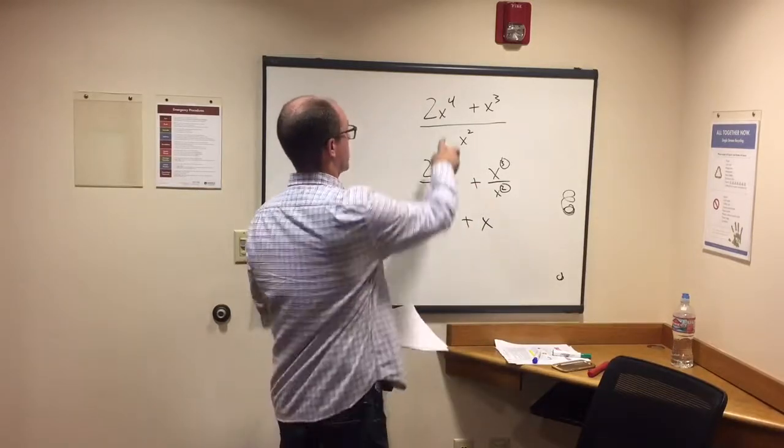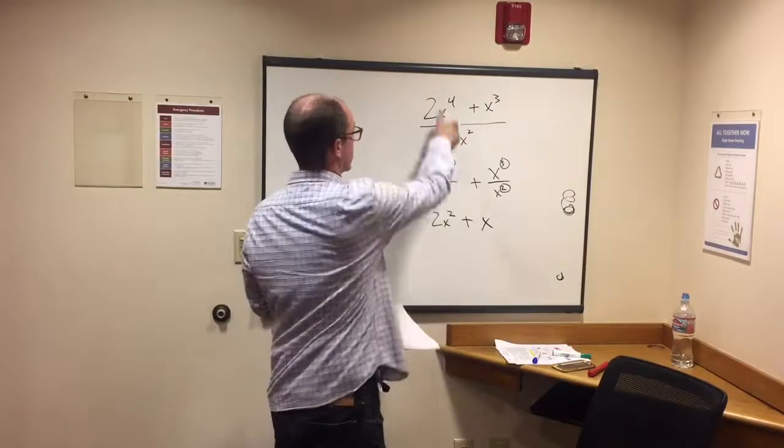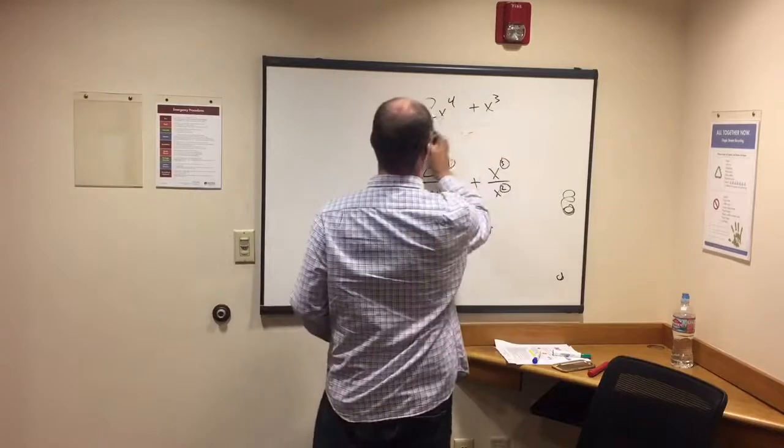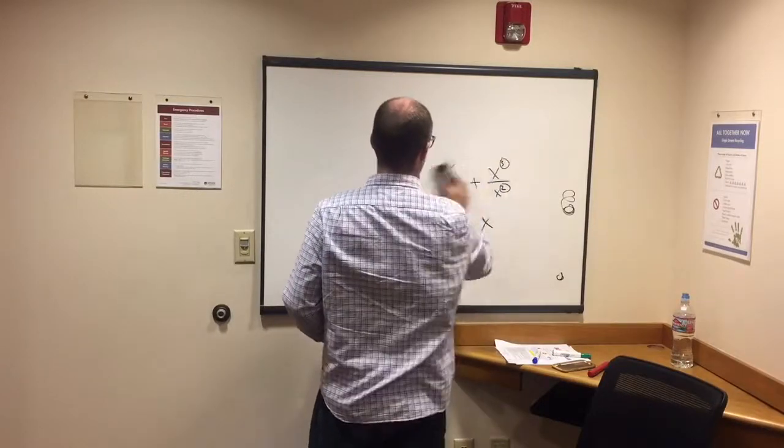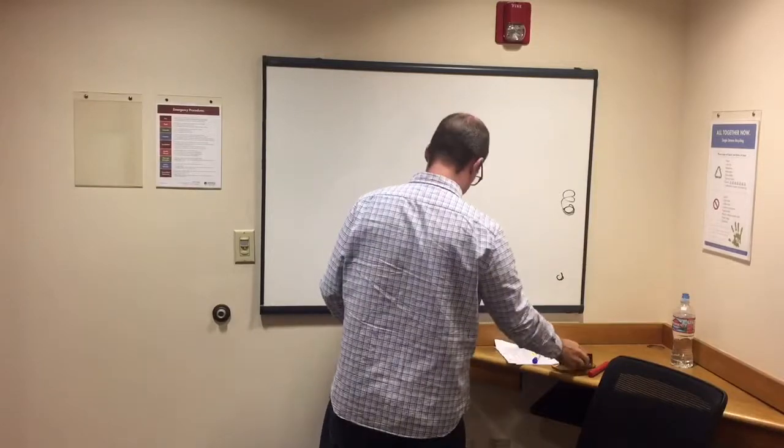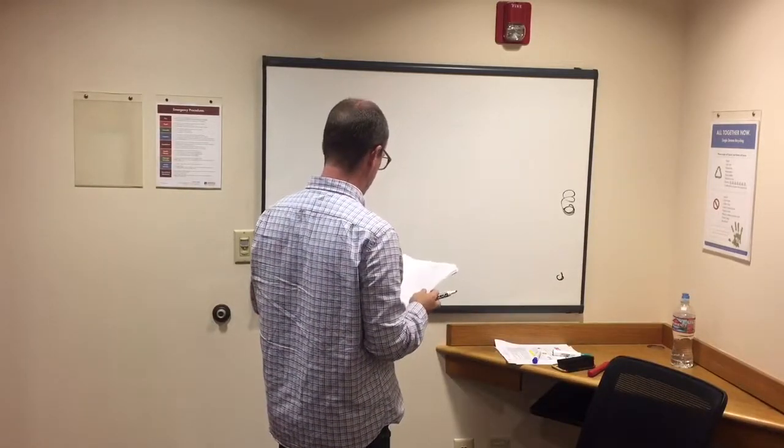We need to remember that we divide both the numbers on the top by the thing on the bottom. And in this case, we are subtracting the exponents.